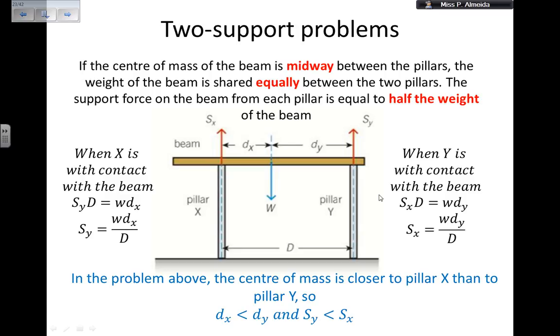If the center of mass is closer to X, like in this problem, then the distance in X is smaller than the distance in Y, obviously. So that means that the support in Y is smaller than the support in X. Because the center of mass is closer to X, then it means that X is doing the biggest effort.